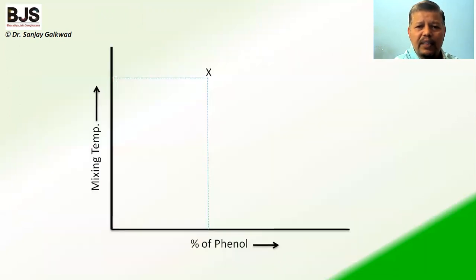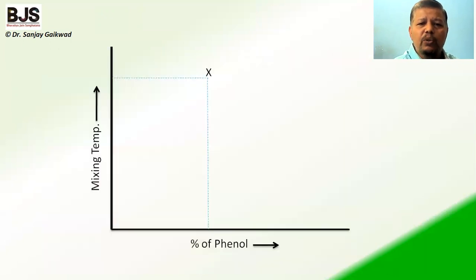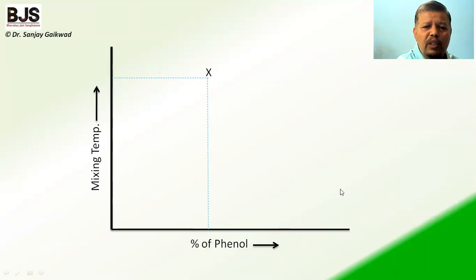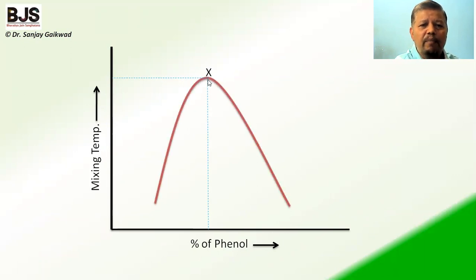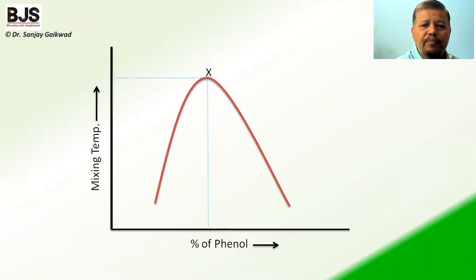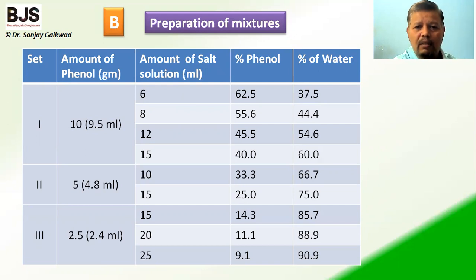From this data, we plot a graph with mixing temperature on one axis and percentage of phenol on the other axis. The graph is bell-shaped — like a bale shape — and at the apex, the maximum temperature represents the point where the two solutions at a proper proportion mix together, giving the critical solution temperature. In the second part, instead of water, we take a salt solution to study what happens to the critical solution temperature after addition of salt.